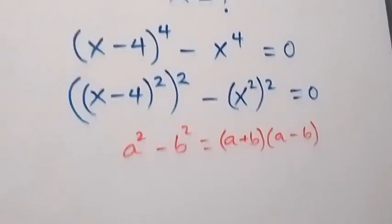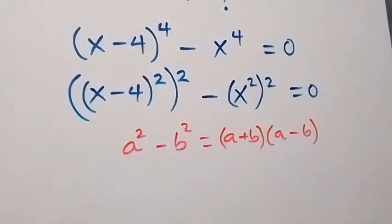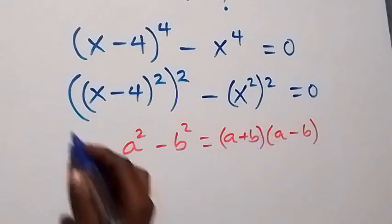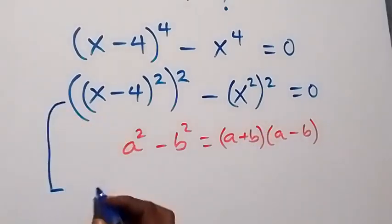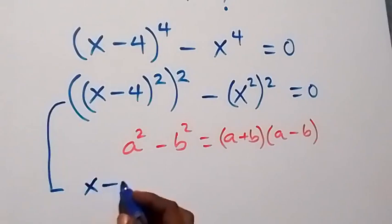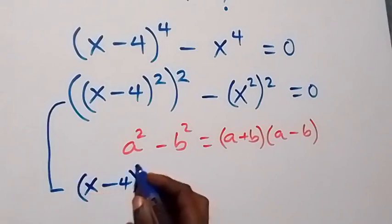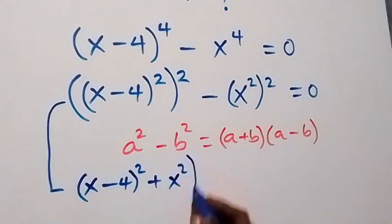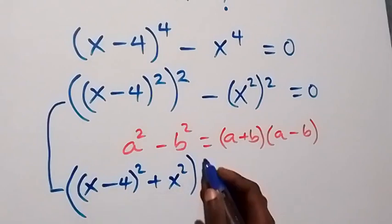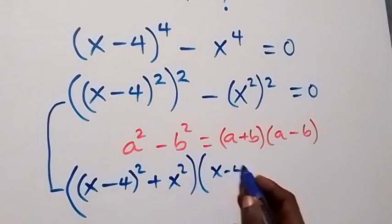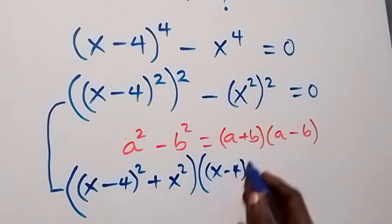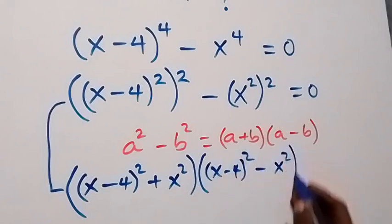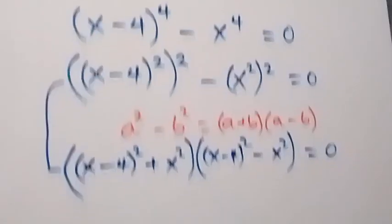Here, x minus 4 squared is serving as a, and x squared is serving as b. Then this becomes x minus 4 squared plus x squared, then multiplied by x minus 4 squared minus x squared, equals to 0.